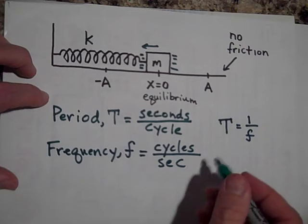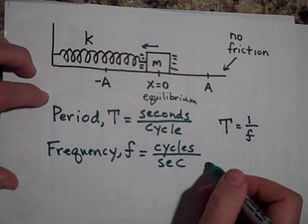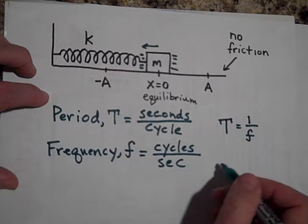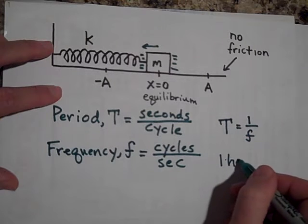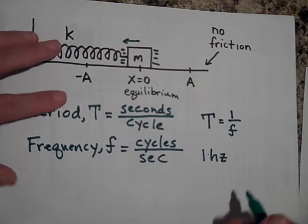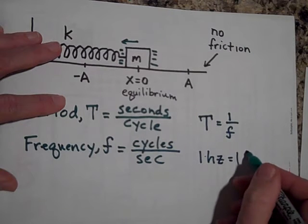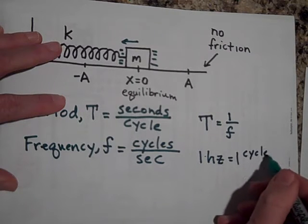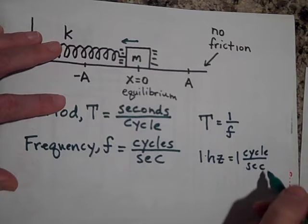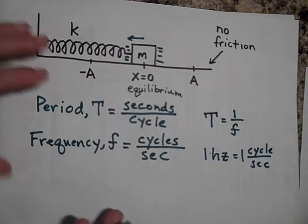All right, frequency, cycles per second, has a name. Sometimes we call cycles per second hertz. One hertz, abbreviated Hz, is equal to one cycle per second.